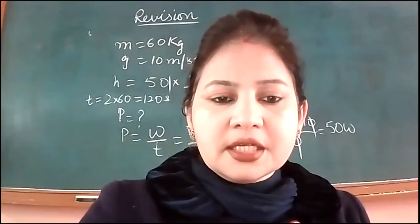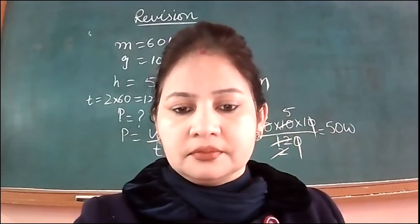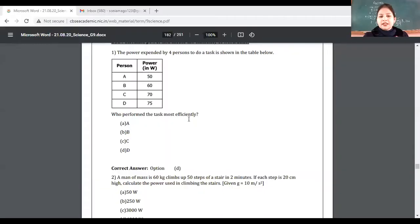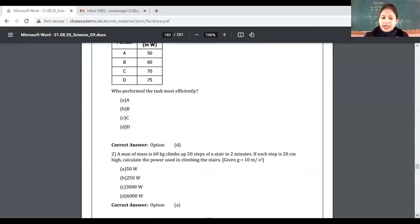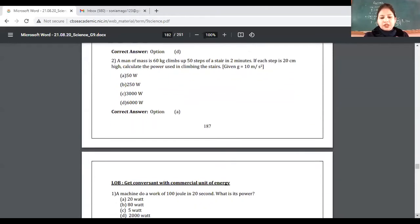Our answer is 50 watt. Let's see the next question. Let's see the answer first. So it's A, 50 watt. That is the right answer. Read the next question. A machine can do a work of 100 joule in 20 seconds. What is its power? Yes, solve this question and tell me the answer.